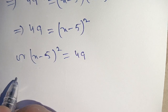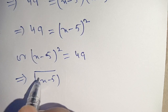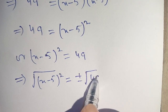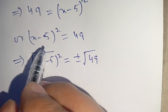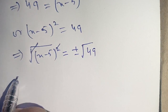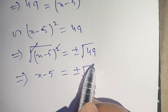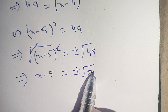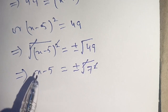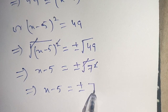Now taking square root on both sides, we get square root of x minus 5 whole square is equal to plus or minus square root of 49. We can cancel the square and square root, and square root of 49 can be written as 7 squared, so the square and root cancel out, giving x minus 5 is equal to plus or minus 7.